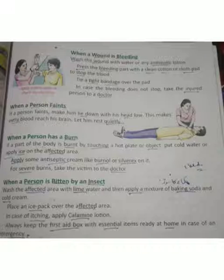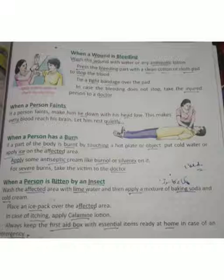آج جو ہمیں پڑھنا ہے وہ ہے: when a wound is bleeding۔ جب کسی کو چوٹ آ جائے اور خون نکل رہا ہو تو ہم کیا first aid دے سکتے ہیں؟ پہلا قدم: wash the wound with water or any antiseptic lotion۔ جہاں پر زخم لگا ہو اسے پانی سے صاف کریں یا کسی antiseptic lotion سے۔ Antiseptic کوئی بھی ایسی چیز یا دوائی ہے جس سے infection سے بچا جا سکے۔